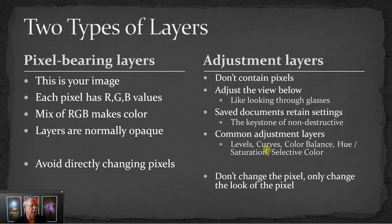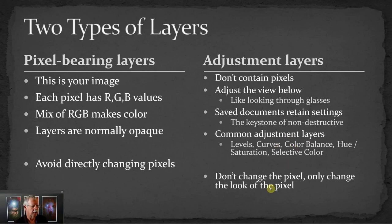The common adjustment layers are levels — which in PixInsight terms would be kind of similar to the histogram transformation tool. Levels and curves both are somewhat like histogram and curves transformation. Color balance, hue saturation, selective color — these are all pretty common adjustment layers. Most importantly, they don't change the pixel, only change the look of the pixel, and maybe that will make more sense when we get into some examples.